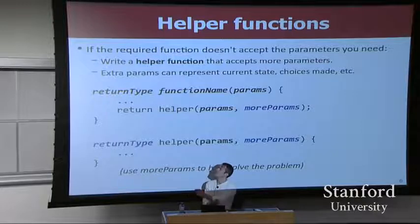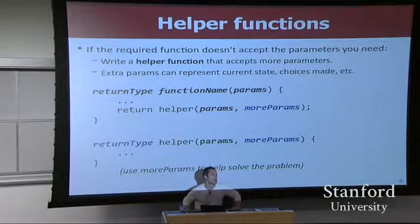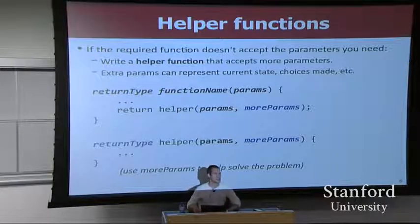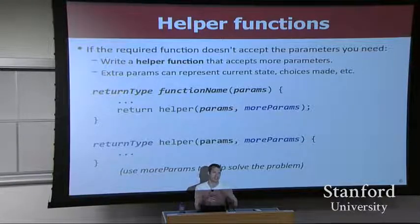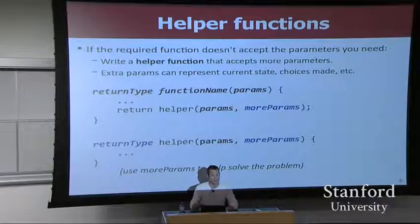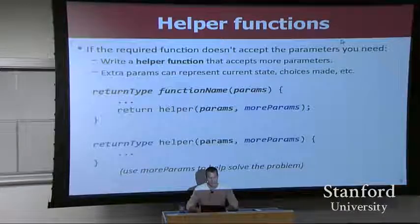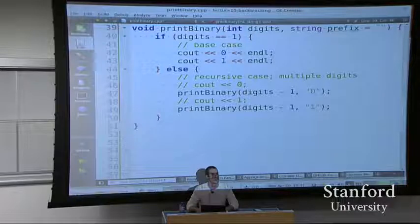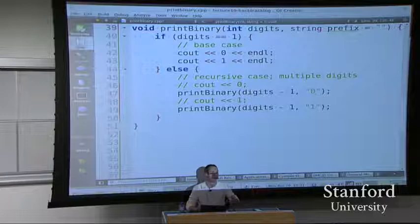We added a prefix parameter to the function. You don't always get to just change the heading of a function - sometimes the specification says it must have an exact header. If that's the case, you can have two copies of the function, or use an optional parameter default value. I would have the prefix equal empty string by default, so the client on the outside doesn't have to pass a prefix just to get this thing started.